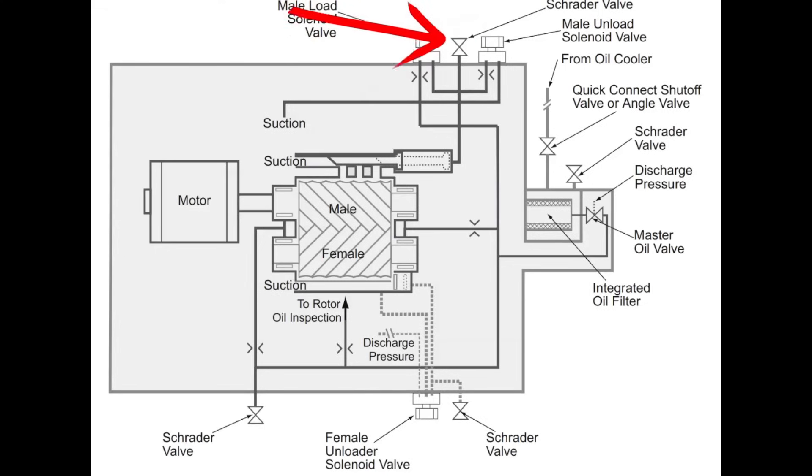So these are your male load and unload. These are controlling a slide valve which is internal to the compressor. And the female unloader is controlling a bypass. It's not a slide valve, it is an internal bypass. And they serve very different functions for the compressor.